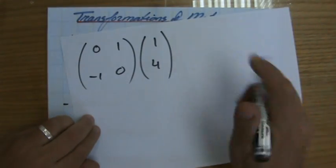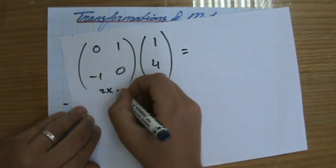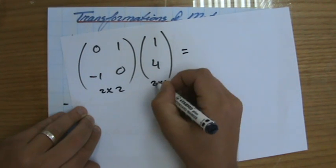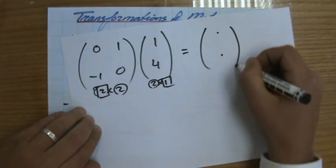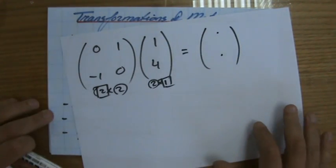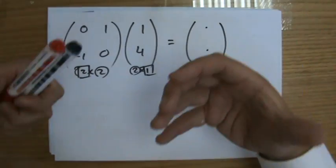So I'm just going to check that. This is 2x2, that is 2x1, so yes I can multiply it and my answer is going to be a 2x1 matrix. I know that because I've done it a thousand times, but still it's good to check that every time.